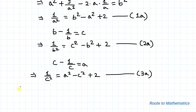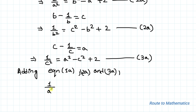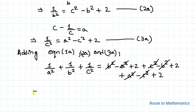Adding equations 1a, 2a, and 3a: 1 by a square plus 1 by b square plus 1 by c square equals to (b square minus a square plus 2) plus (c square minus b square plus 2) plus (a square minus c square plus 2). The a square, b square, and c square terms all cancel out, leaving us with 1 by a square plus 1 by b square plus 1 by c square equals to 6. Let's call this equation 6.